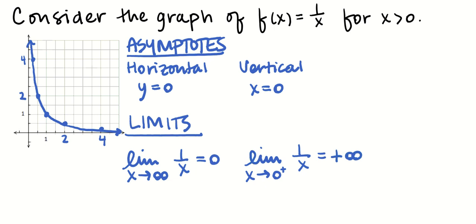For the vertical asymptote, it sure seems like the limit as x approaches 0 from the positive side of 1 over x is equal to positive infinity. We will be able to say that once we define what these things mean. A limit as x goes to infinity equaling 0 corresponds to the y equals 0 horizontal asymptote. The vertical asymptote x equals 0 is where, as x is approaching 0 from the positive side, we get infinity.